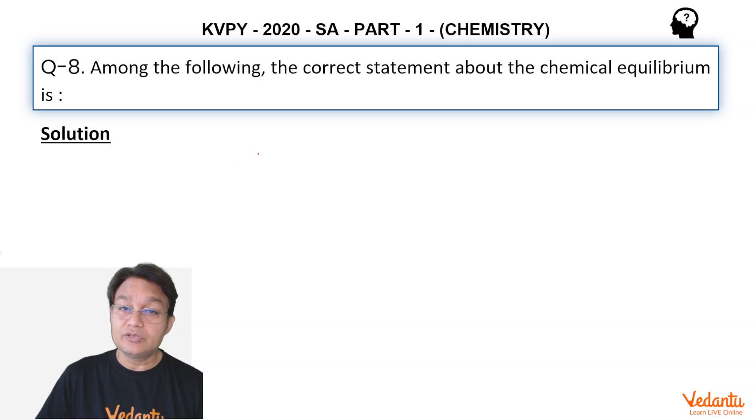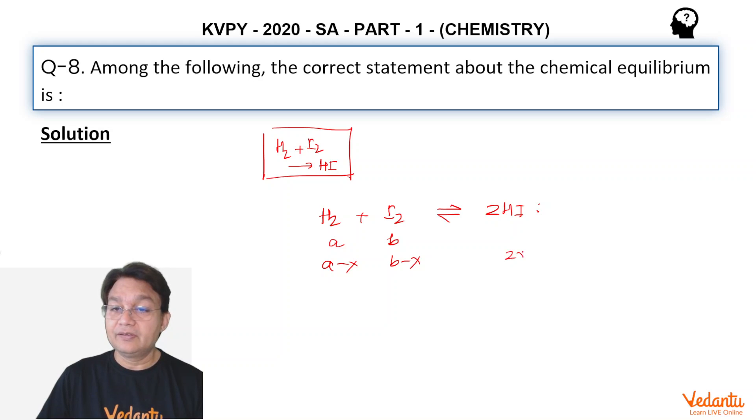For example, if you have in a closed vessel, if you start with H₂ plus I₂, obviously you are going to get HI as a product because they react to form H₂ plus I₂ reacts to form twice HI. So if you have some amount of this, say A, some amount of this, say B, they are obviously going to react to form, after some time A minus X, B minus X and that's going to be 2X, something like this.